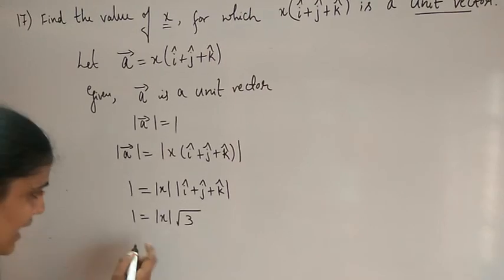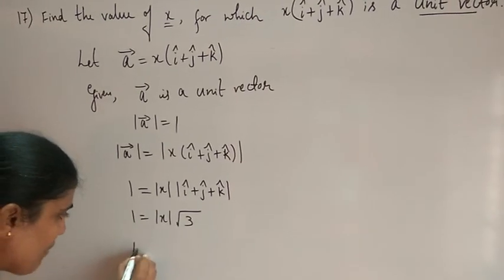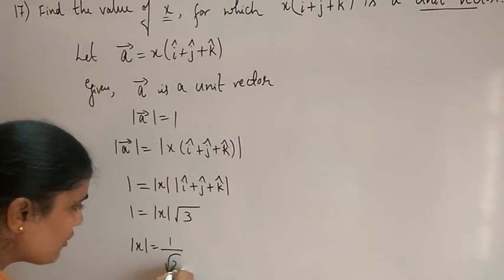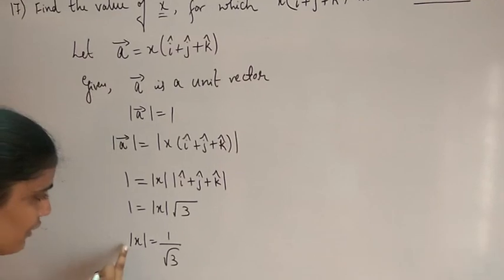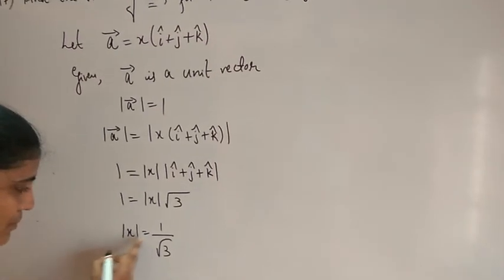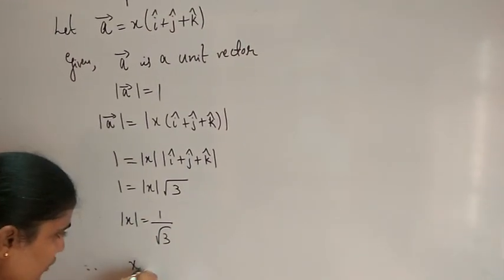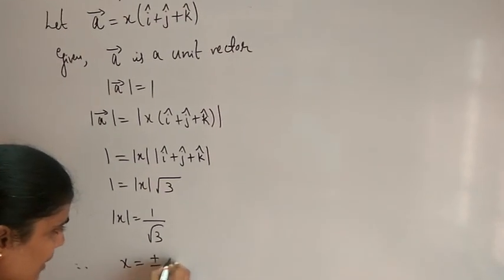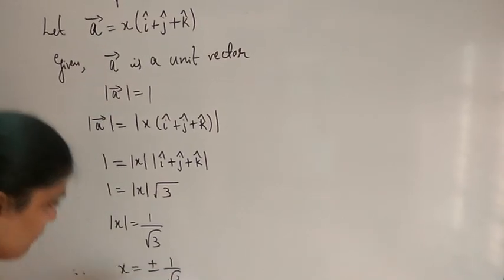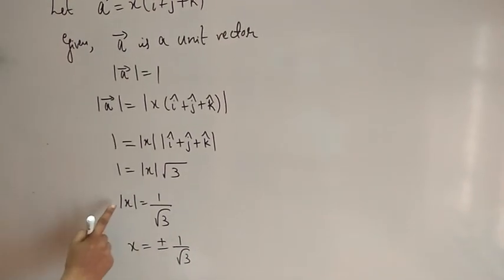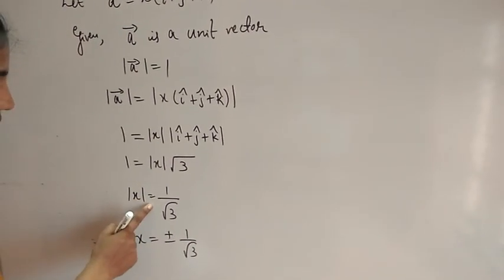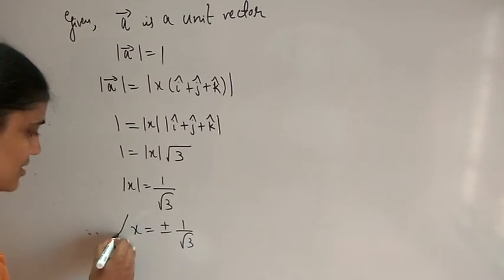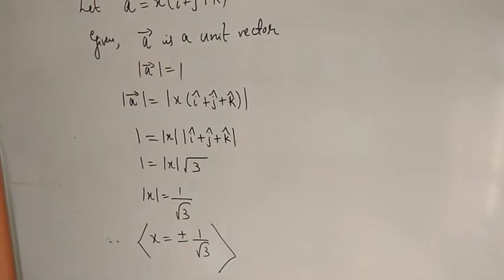Taking root 3 to the left side: magnitude of x equals 1 by root 3. Removing the modulus, x equals plus or minus 1 by root 3. This is the value of x.